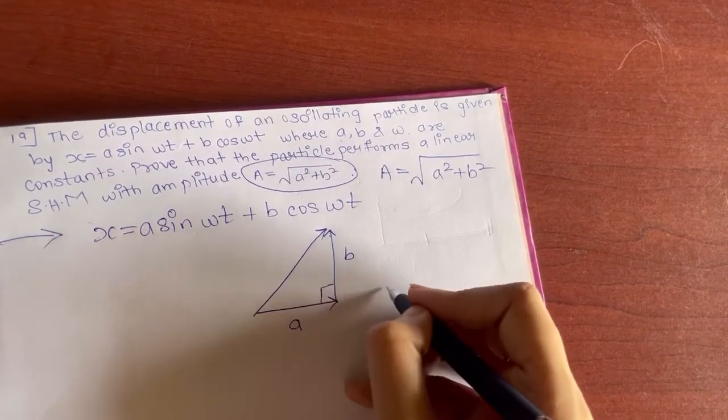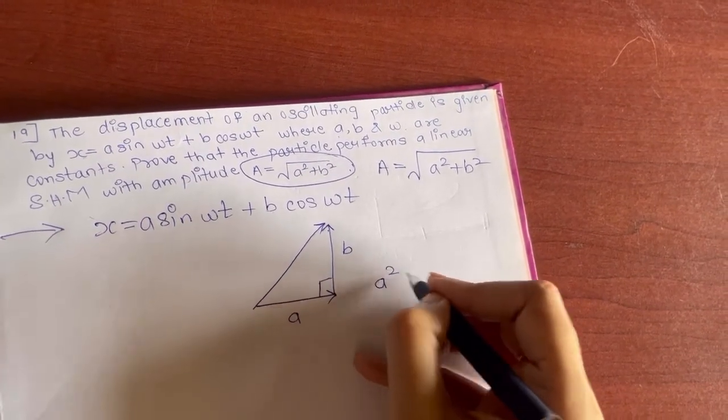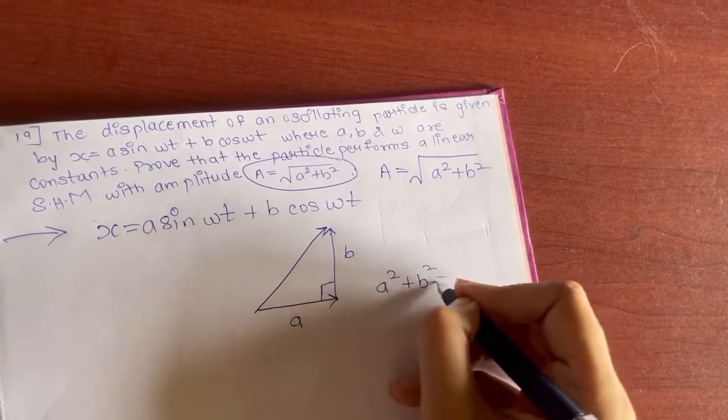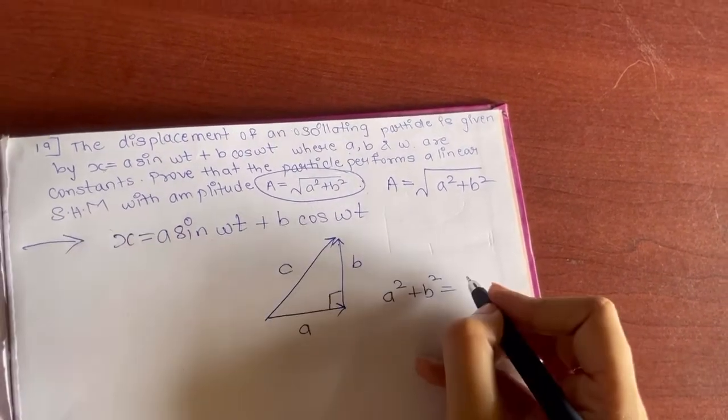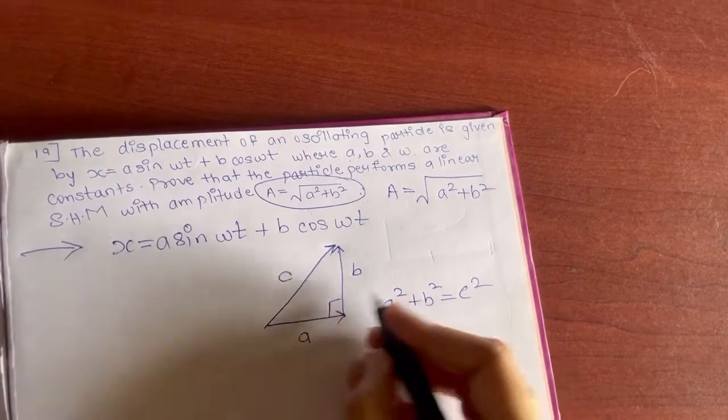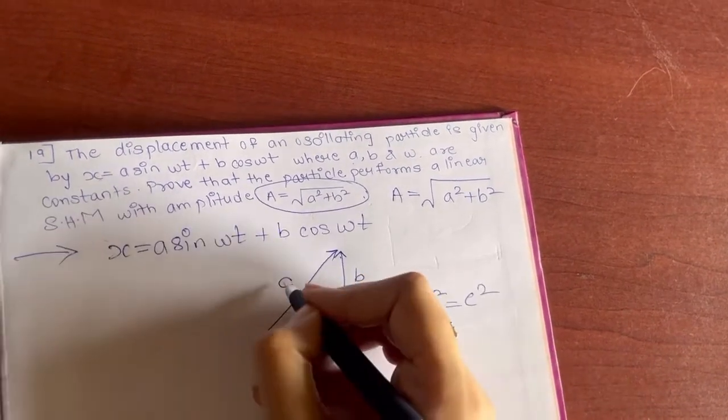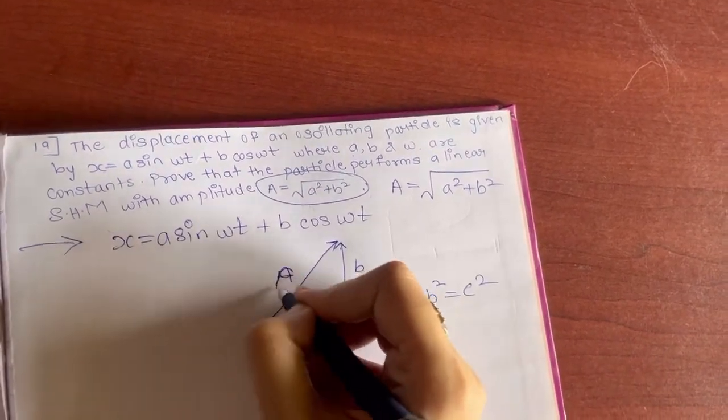That is a², b², that will give you the third side, that is c². Instead of c, you can call it as capital A.